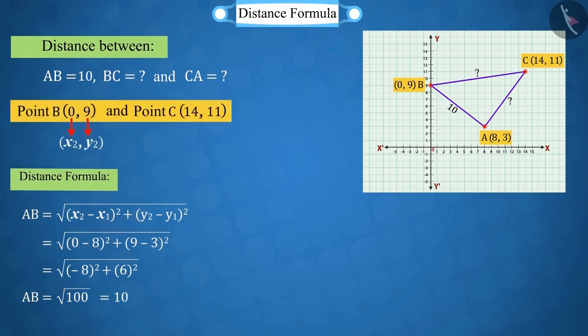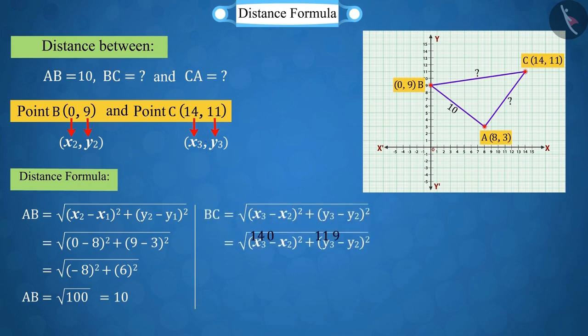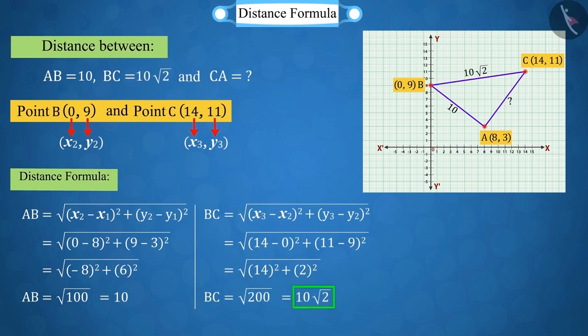Similarly, the coordinates of point C are x3, equal to 14 and y3, equal to 11. According to the distance formula, we get the measure of BC as 10 root of 2.